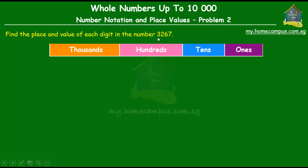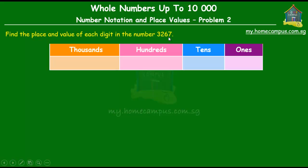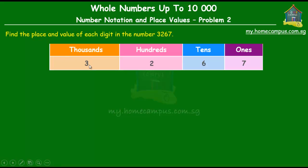Now we know how to put this number in the table. 7 stands for 7 ones, so it goes under the ones column. 6 stands for 60, or 6 tens, so it goes under tens. 2 stands for two hundreds, so it goes under the hundreds column. And 3 stands for three thousands, so it goes under thousands. So what we have here is three thousands, two hundreds, six tens, and seven ones.